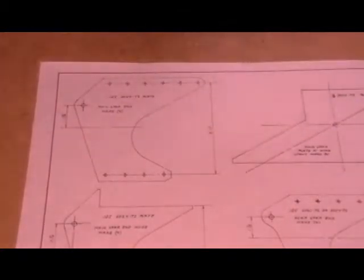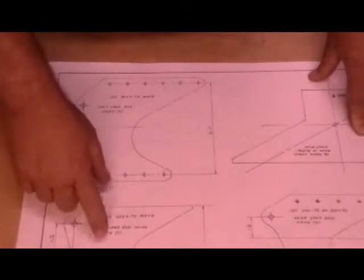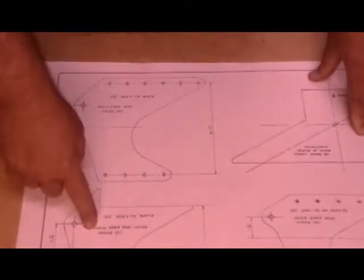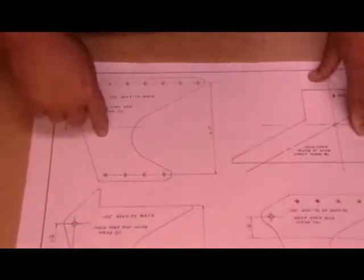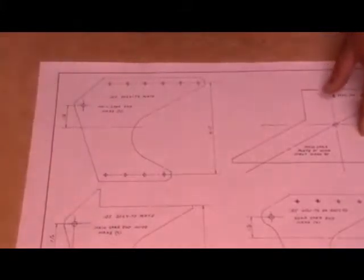I needed to make four of these and four of the ones underneath for the main spar. Two for the left wing, two for the right wing, two for the left, two for right, makes sense.